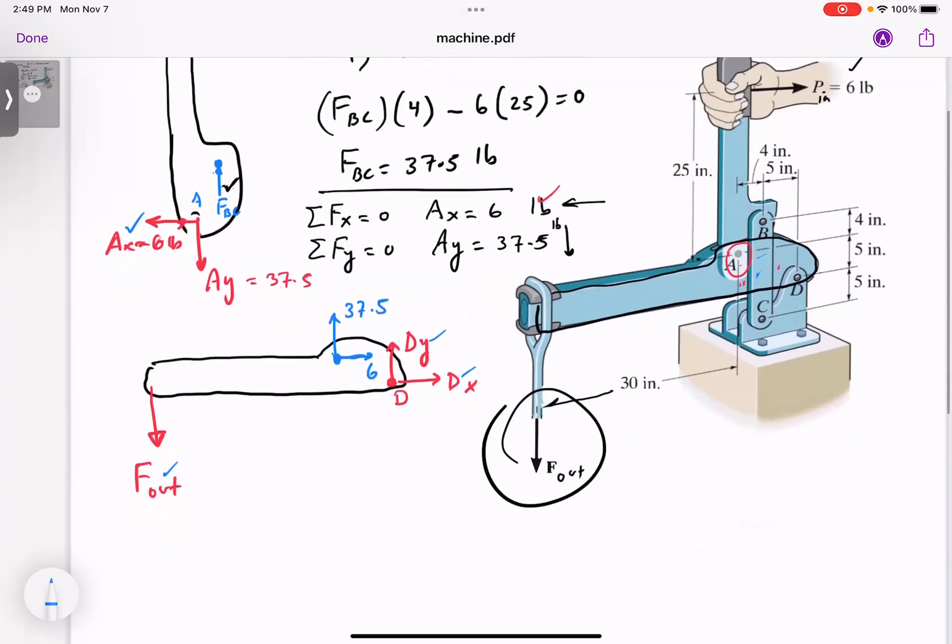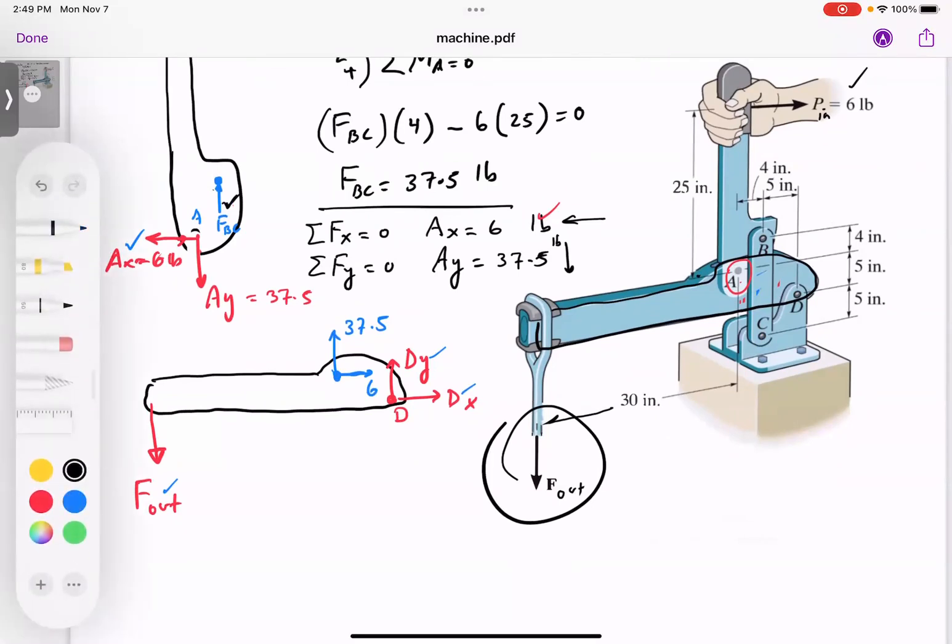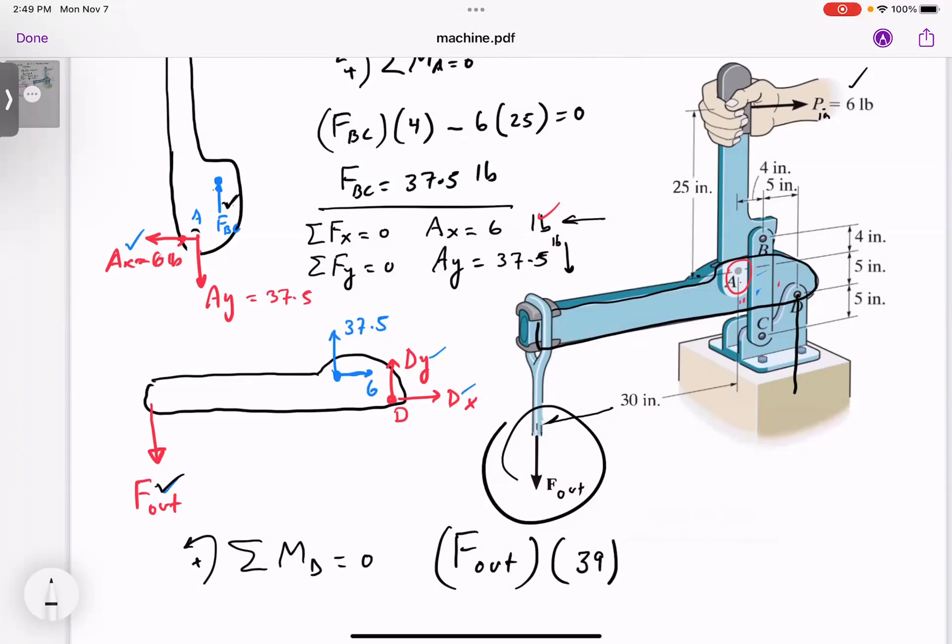Now I have three unknowns Dx, Dy and F out. Since our objective is to find F out we take a moment about D. If you take counterclockwise as positive, the moment of F out about D, the distance looks like 30 plus 9, 39 inch, that's going positive. Then these two guys both give me a negative moment, 37 and a half times nine and six times five inches.